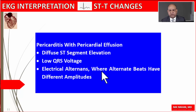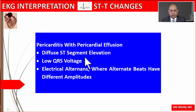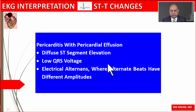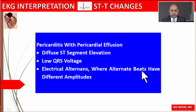Over several weeks the ST segment returns to the baseline, but T wave inversion may persist for a while before normalizing. To summarize, findings in pericarditis include diffuse ST segment elevation, low QRS voltage in some patients, and if they have moderate pericardial effusion, we may also see electrical alternans where alternate beats have a different QRS amplitude.